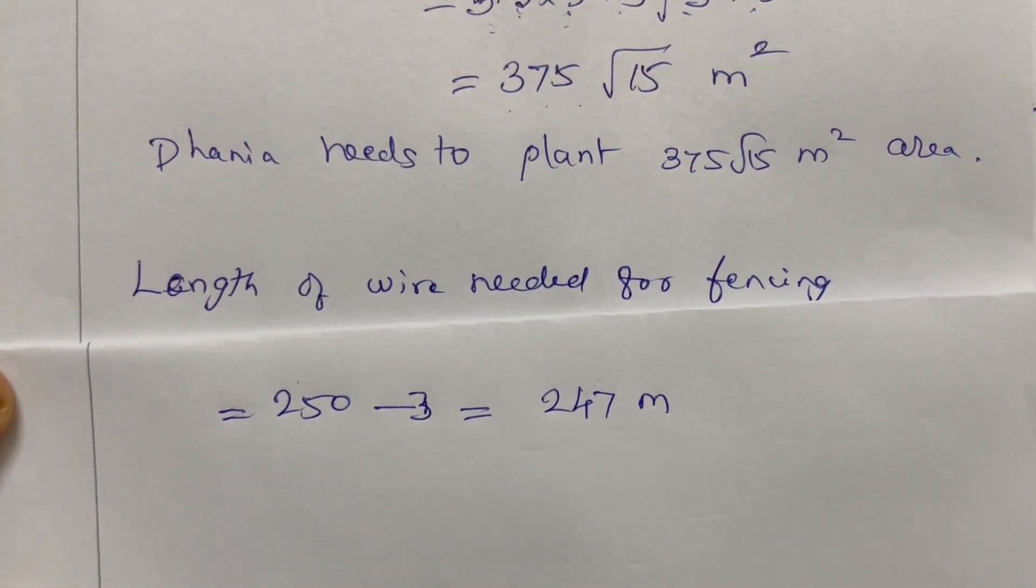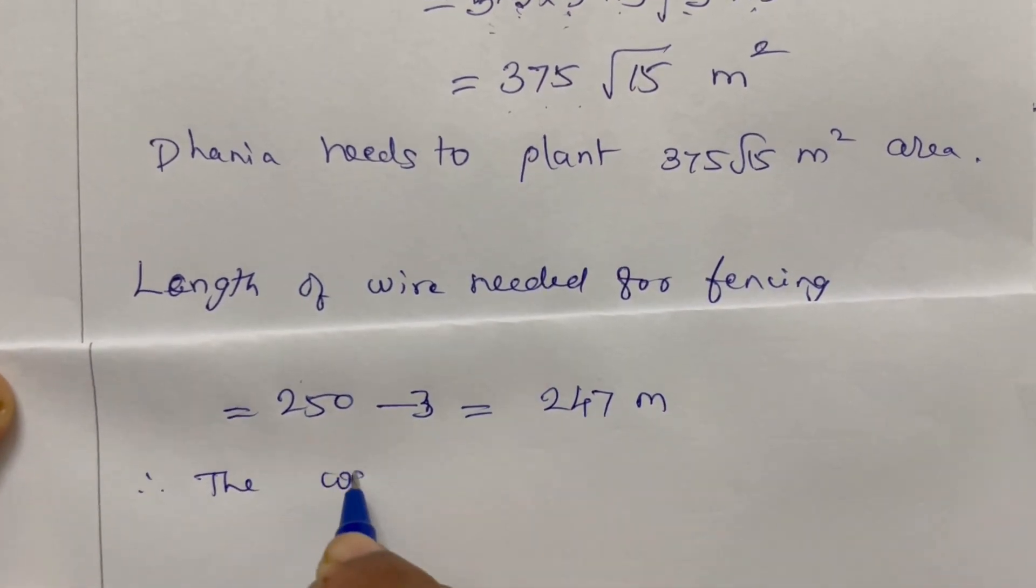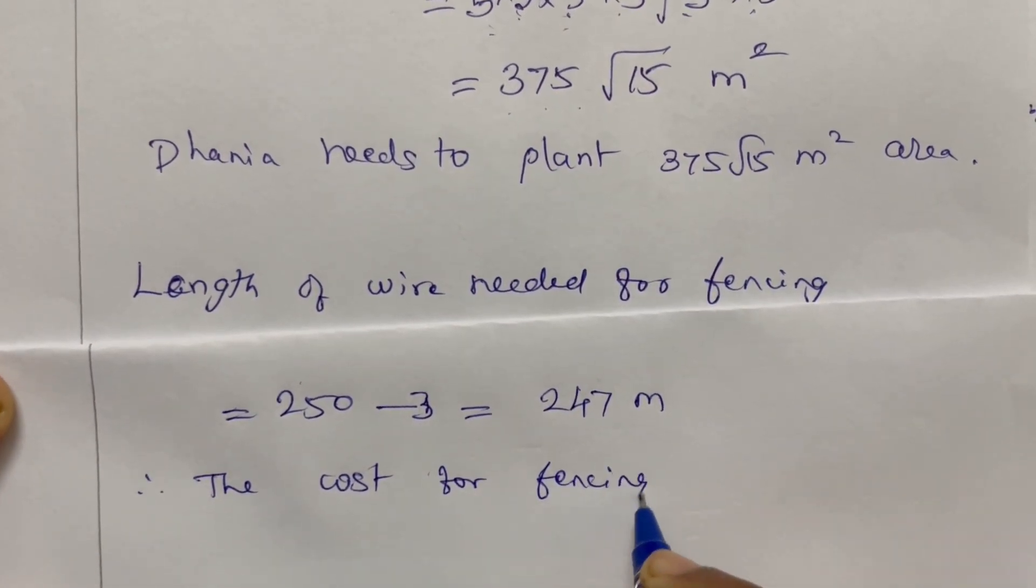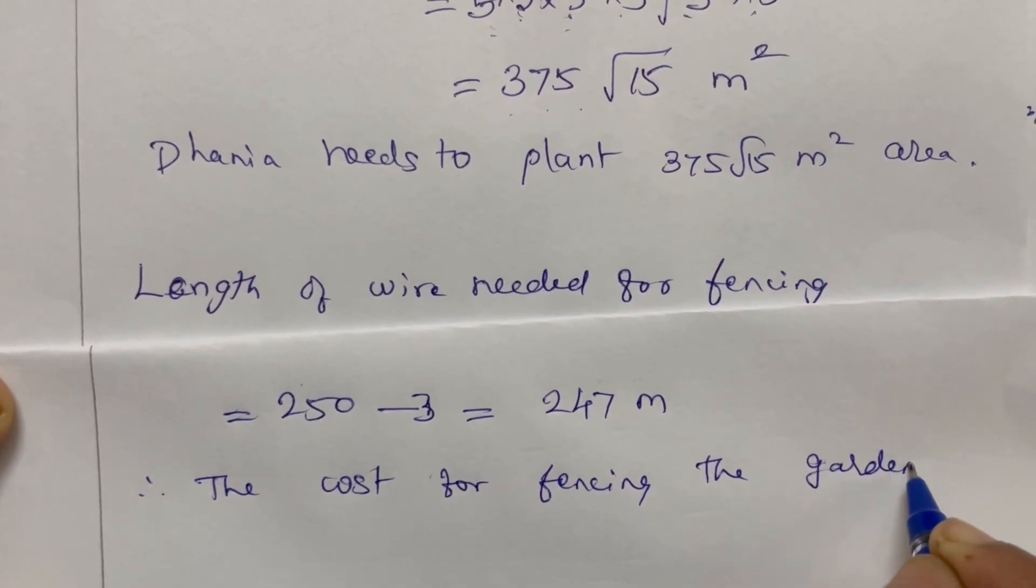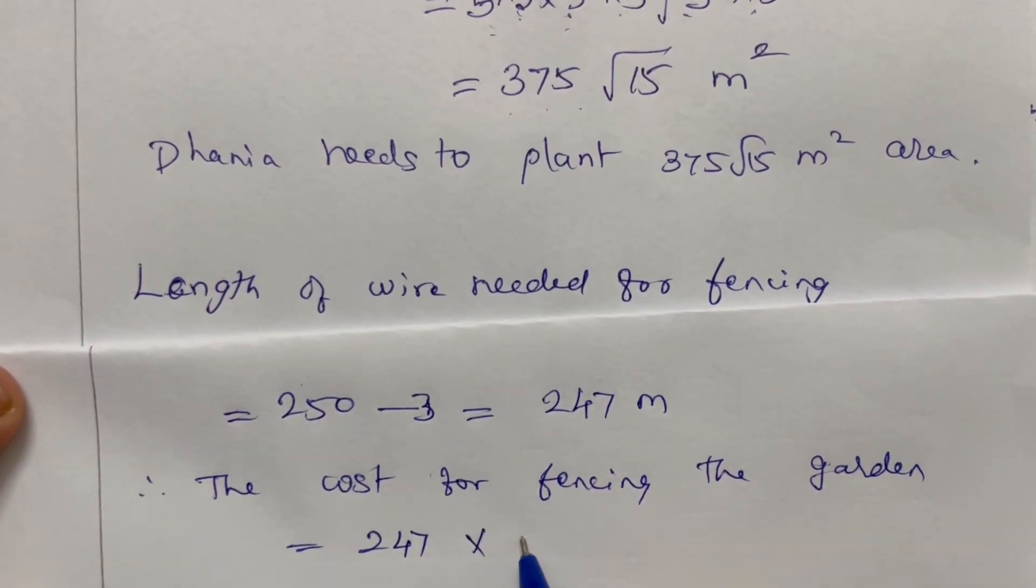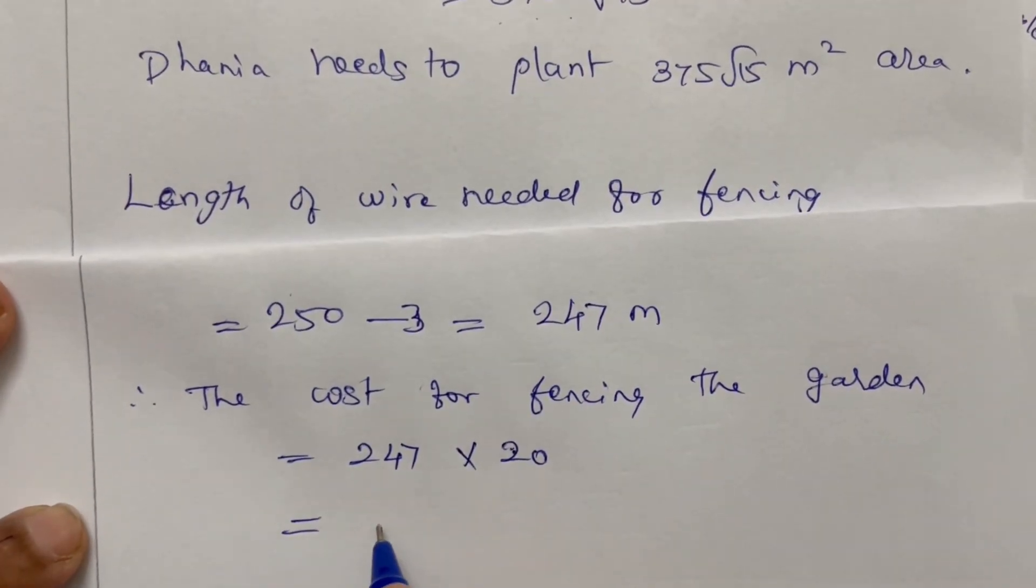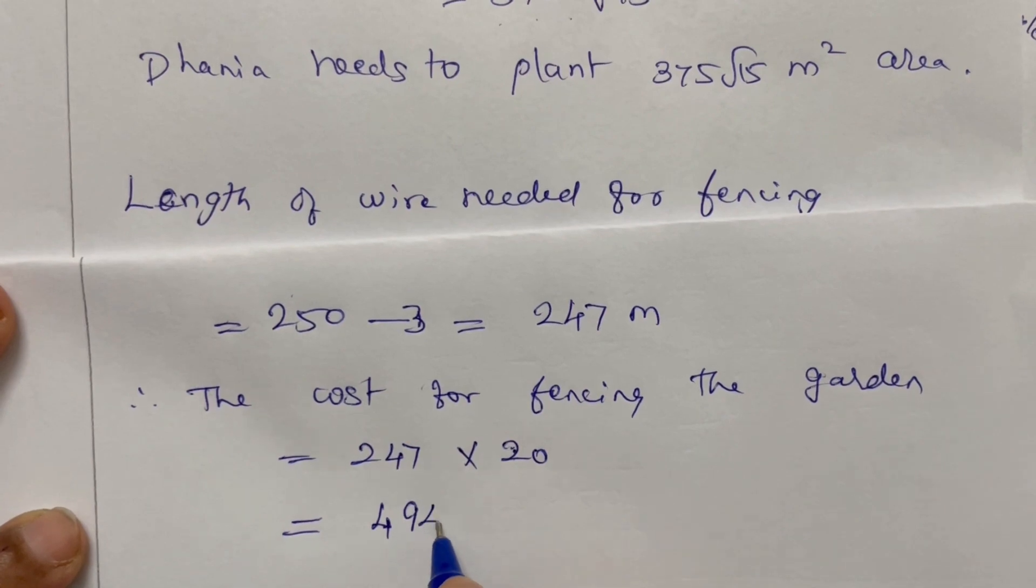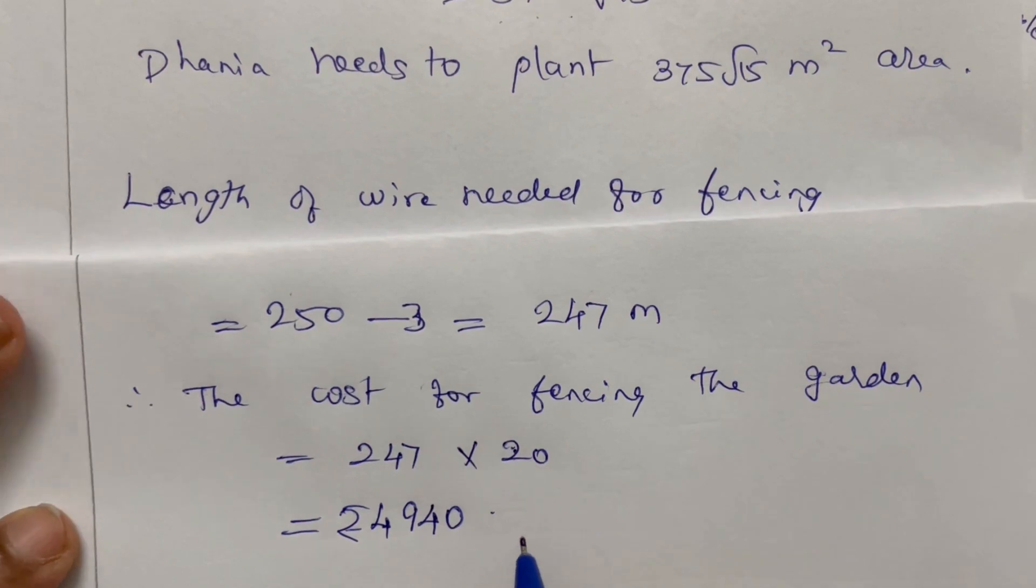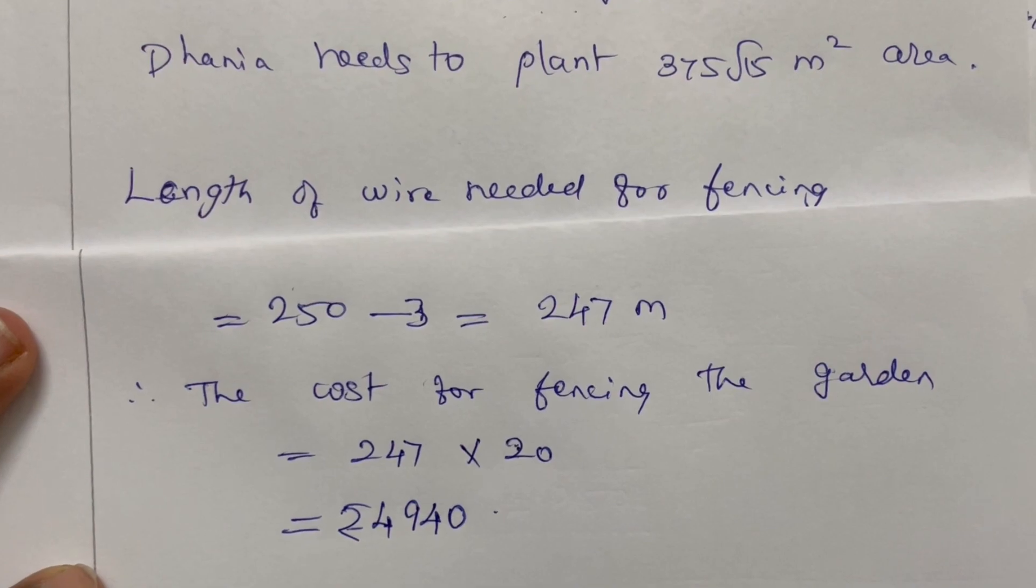The cost for fencing the garden equals total length 247 into 20 rupees per meter. Rupees 4940. So the cost of fencing the garden is rupees 4940.